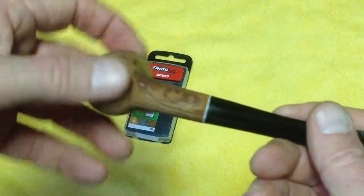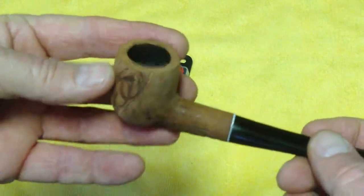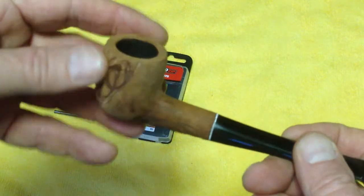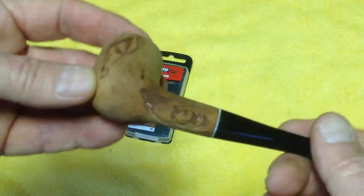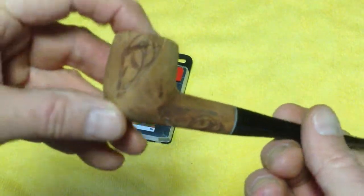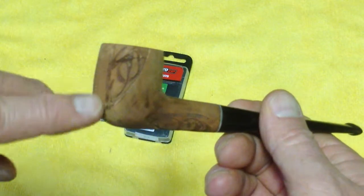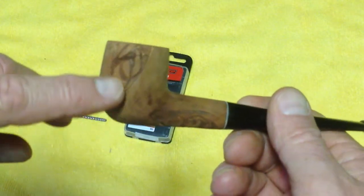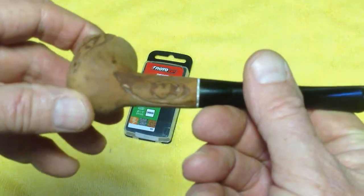I polished the stem and I sanded the bowl and reamed it and just cleaned it out really well, getting it ready to rusticate. And I'm going to have to rusticate this one because someone has carved some things in here that doesn't look like anything.